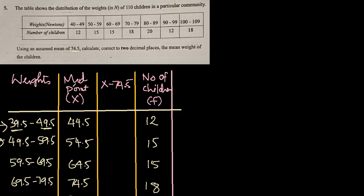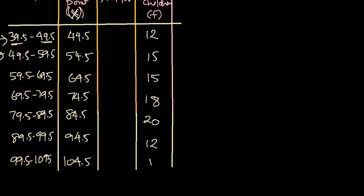And then I found the midpoint of the two by adding the two and dividing by 2. So if I add 39.5 and 49.5 divided by 2, it will be 89 divided by 2, which is 44.5. And that's how we find midpoint. I call it x. So it is there for all the classes we have done.